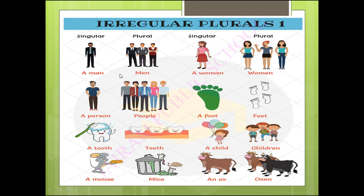Here are some examples. A man — plural: men (M-E-N). We are changing the vowel here. A person — plural: people. A tooth — plural: teeth. A mouse — plural: mice. Likewise, a woman.